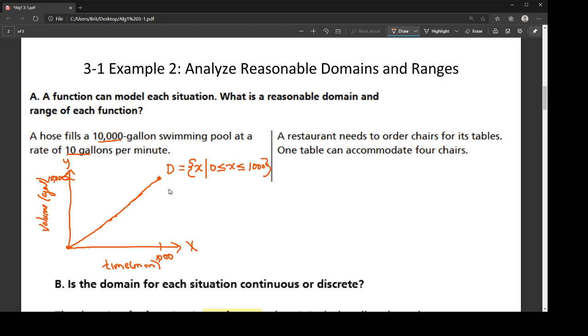So now the range, the range is all the possible y values where, and so now we're going to describe these y values. So it's all the values going from 0 to 10,000. So I'm going to say where y is greater than or equal to 0 and less than or equal to 10,000. So those are our domains and range.